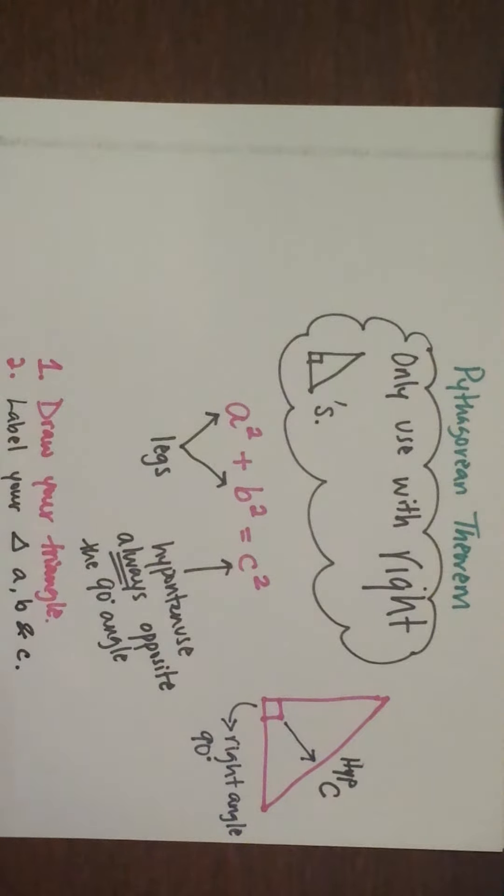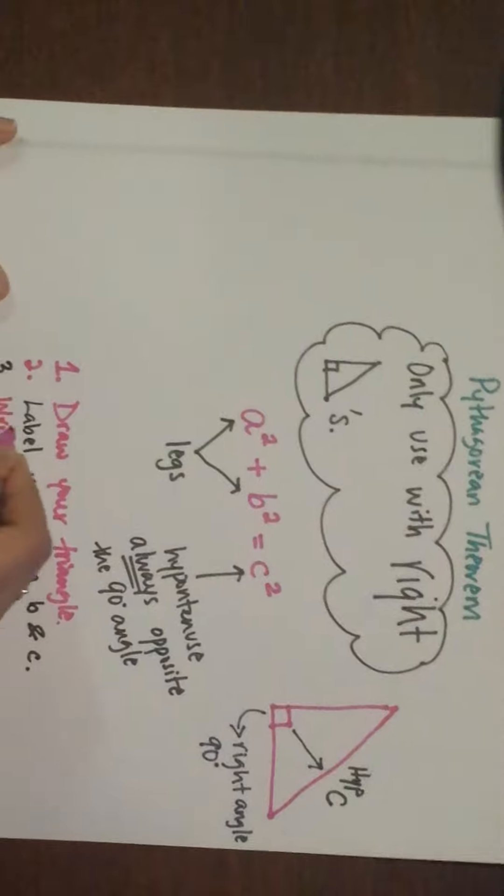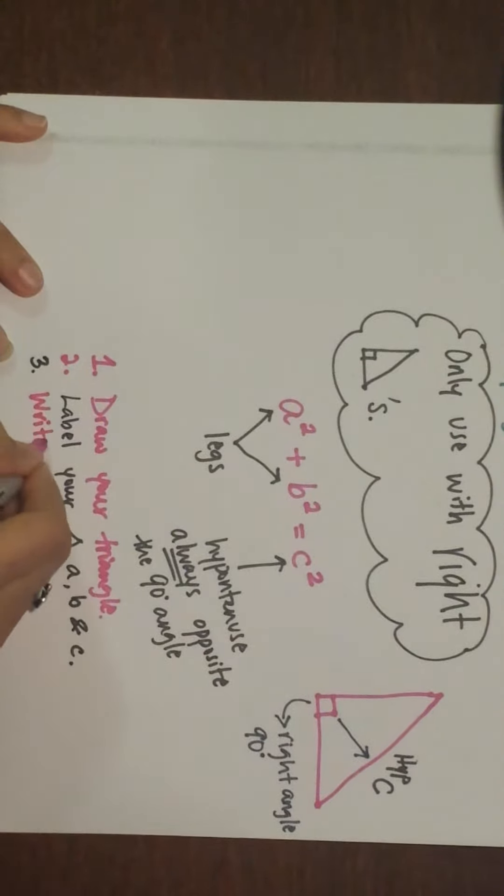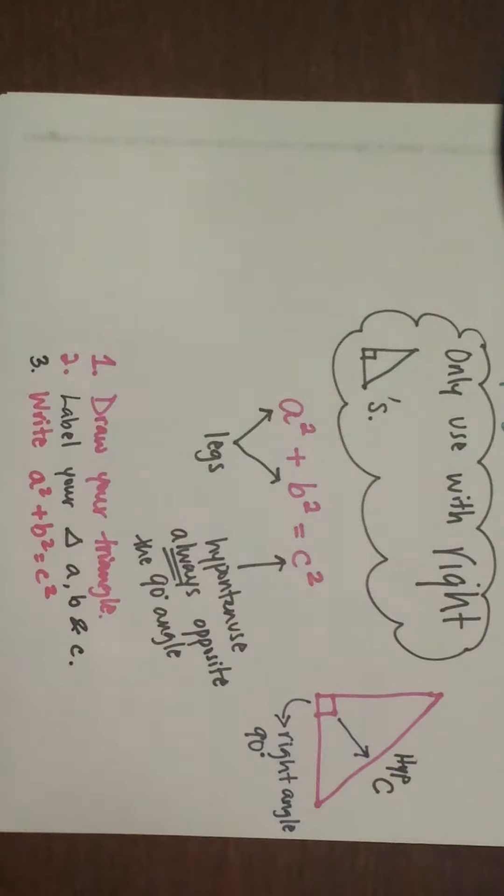Step number three: write the formula. A squared plus B squared equals C squared.